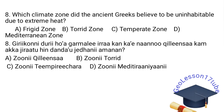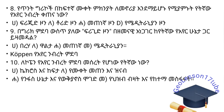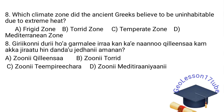Question number eight: Which climate zone did the ancient Greeks believe to be uninhabitable due to extreme heat? The correct answer is the Torrid zone — the third zone in the Greek classification.